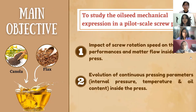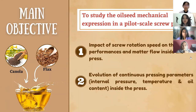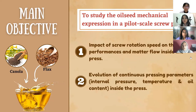The main objective of this experiment is to study the oil seed mechanical expression of canola and flax seeds in a pilot-scale screw press. There are two details emphasized: first, the impact of screw rotation speed on press performance and material flow inside the press. Press performance influenced by speed includes screw press capacity, passage time, extraction yield, and specific energy consumption. The material flow affected by speed rotation is analyzed based on press cake taken from the gauge, oil content, and material velocity. This experiment also emphasizes the evolution of continuous pressing parameters — internal pressure, temperature, and oil content.